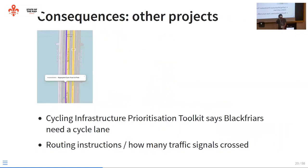Just to demonstrate that other people have this problem: a colleague of mine, Robin Lovelace, worked on a project called CIPT that looks at where cycling infrastructure might be needed. In one of their tools, they say that Blackfriars Bridge in London needs a cycle lane — but there's already a cycle lane directly to the left. The problem is it's very hard in any analysis to take what's in OSM and treat the whole thing as one road and reason about whether this bridge has a cycle lane or not. It's just very hard to do with the separate ways.